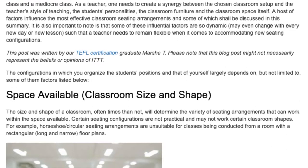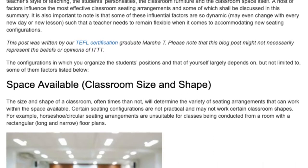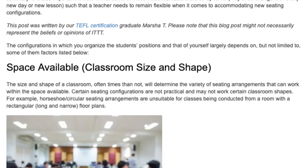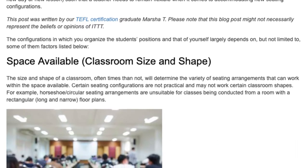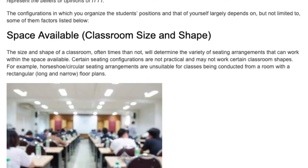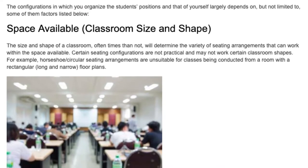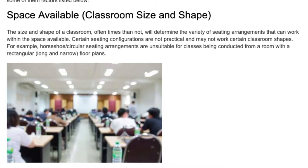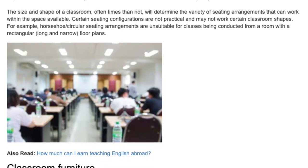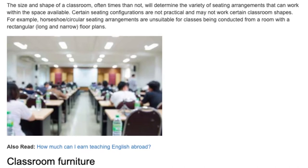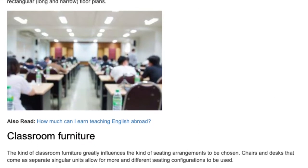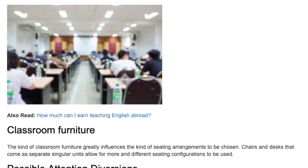The configurations in which you organize the students' positions and that of yourself largely depends on, but is not limited to, some of these factors. Classroom furniture: the kind of classroom furniture greatly influences the kind of seating arrangements to be chosen. Chairs and desks that come as separate singular units allow for more and different seating configurations to be used.